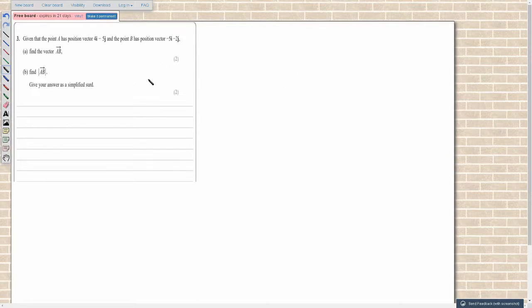For this question we've got 2D vectors. We've got the point A with position vector 4i minus 5j, and we have the point B with position vector minus 5i minus 2j.